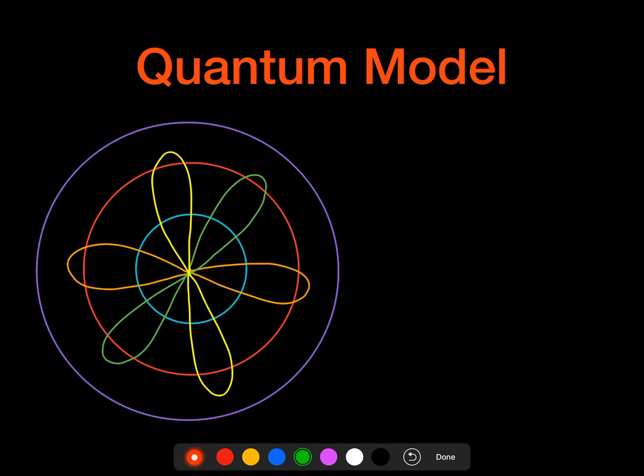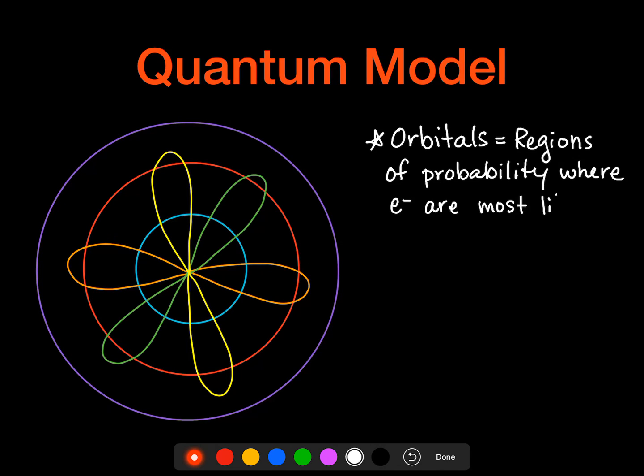The quantum model is actually our current model. And in this model, we say that we have not orbits, but orbitals. And those are regions of probability where we are most likely to find electrons. Now, Heisenberg uncertainty principle says we can't know the exact location and the exact velocity of an electron at any given moment. And the more we know about one, the less we know about the other.